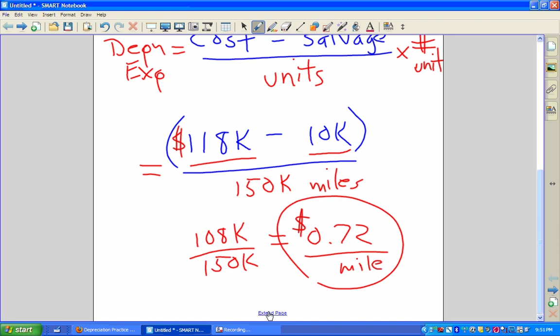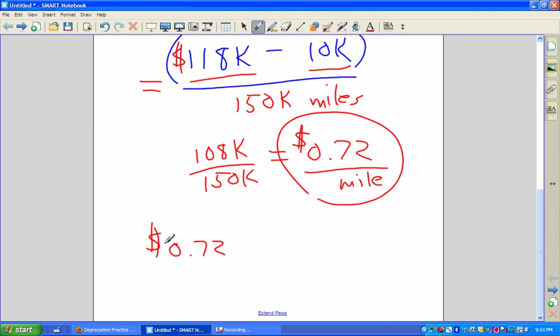I extend the page, and it's going to go 72 cents a mile, or 0.72 dollars times 20,000. And when I do the math here on my calculator, I simply get $14,400.